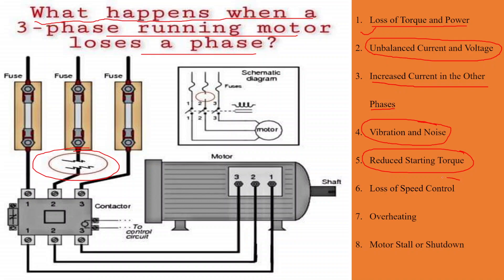Sixth, Loss of Speed Control. Some motors use three-phase power to achieve speed control. Losing a phase can disrupt the motor's speed control capabilities, causing it to operate at a fixed speed or not operate at all.